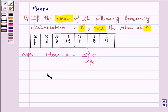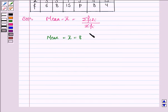Now here, mean is known to us and it is given to be 8. So using this, we'll find the value of p. To use this, we need to find summation fi xi and summation fi. So let's first make a table.